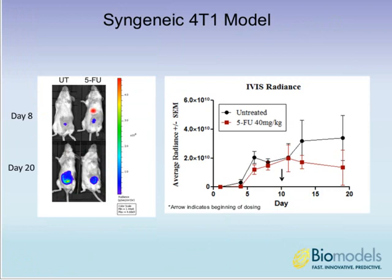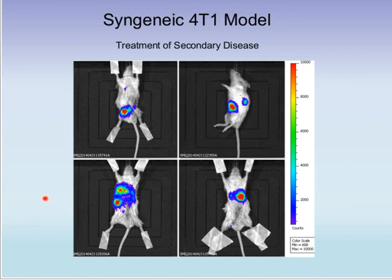This model can also be paired with IVIS imaging since these cells stably express luciferase. Cells can be detected almost immediately after implantation, and animals can be randomized based on total radiance or caliper measurement. Looking at radiance values, tumor regression is visible with 5-FU treatment — making this a great rapid model with an intact immune system where metastases can also be studied as a primary endpoint. Alternatively, if you want to focus on secondary disease, you can surgically remove the primary tumor after a week or so and specifically study metastatic sites.